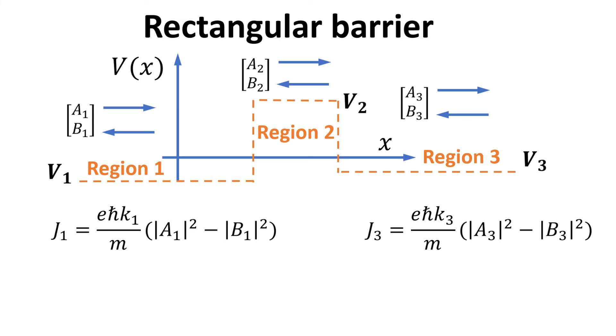In previous video, we have introduced the concept of probability current. The probability currents in regions 1 and 2, expressed in terms of their respective scattering amplitudes, are as follows. We see that the current consists of a contribution due to the forward propagating wave given by A², minus the backward propagating wave by B².